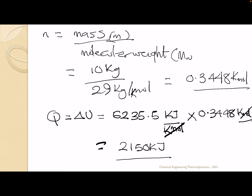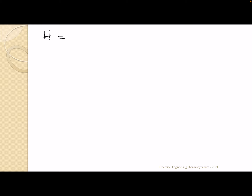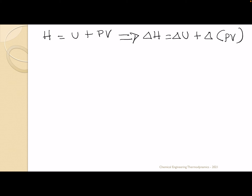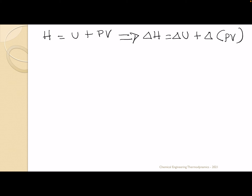So now we have our value in kilojoules. This is our Q and our change in U. The other thing we've been asked to calculate is our enthalpy H. We've been asked to calculate the change in enthalpy. Recall that H equals U plus PV, which can also be written as change in H equals change in U plus change in PV. We can also include N right from the beginning.